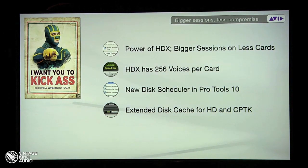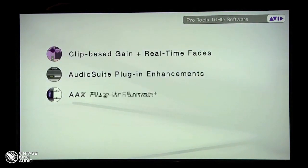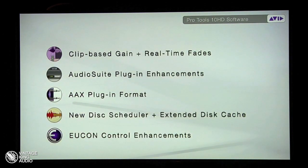The new disk scheduler in Pro Tools 10 — actually even non-HD Pro Tools has the new disk scheduler. Between the combination of the new disk scheduler and no more fade files, even non-HD Pro Tools is going to work amazingly faster and better. The extended disk cache for both HD, and if you have Pro Tools 10 with Complete Production Toolkit, you actually get the extended disk cache. Main features covered: clip-based gain, real-time fades, AudioSuite with handles, multiple plug-ins open, the new AAX 64-bit ready format, the new disk scheduler, extended disk cache.